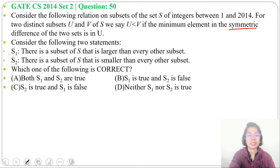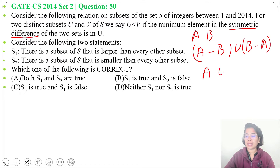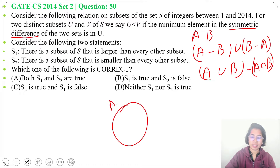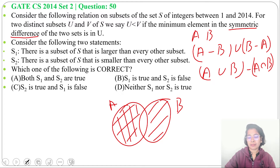First, understand what is symmetric difference. If we have two sets A and B, then the symmetric difference is (A minus B) union (B minus A). Another way is (A union B) minus (A intersection B). If we draw a Venn diagram — this is set A, this is set B — then the shaded part without the intersection, the other parts of A and B, constitute A symmetric difference B.